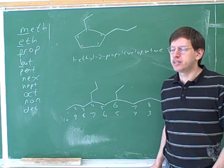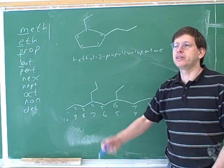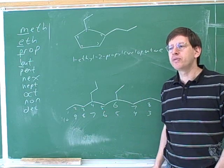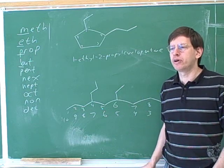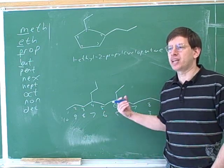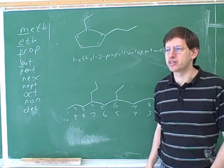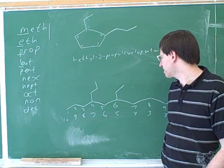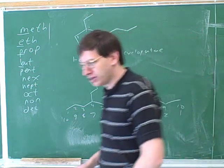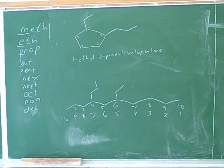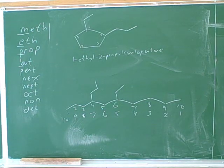We always use alphabetical order to decide what order to list the substituents. But you only need alphabetical order for the numbering if there's a tie between all the various ways of numbering. So that's actually kind of subtle and confusing. So then is it a 6-ethyl-4-propyl-decane? Good.